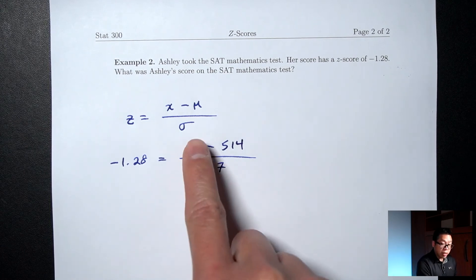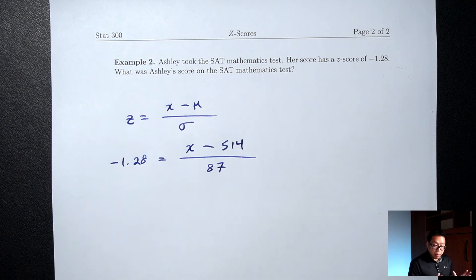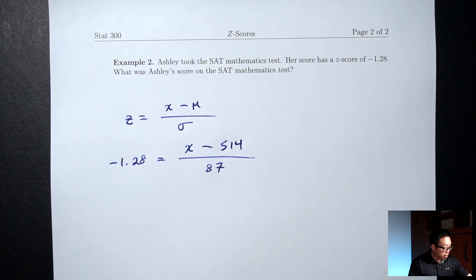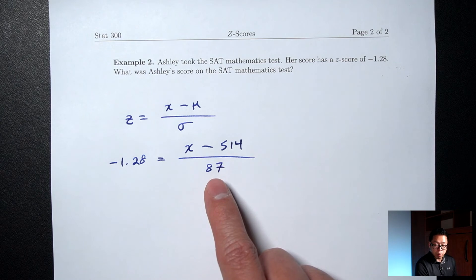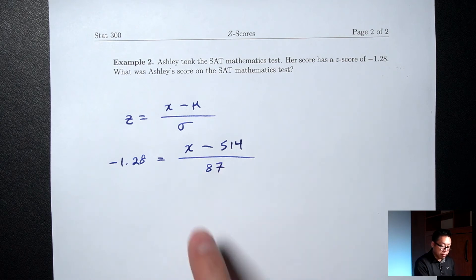And now our job is to find x. So this is going to take a little bit of algebra. This is probably the only time in this class that you'll use algebra. So to get the x by itself, I need to get rid of the 514 and I need to get rid of the 87. So the first thing I'll do is get rid of the 87.